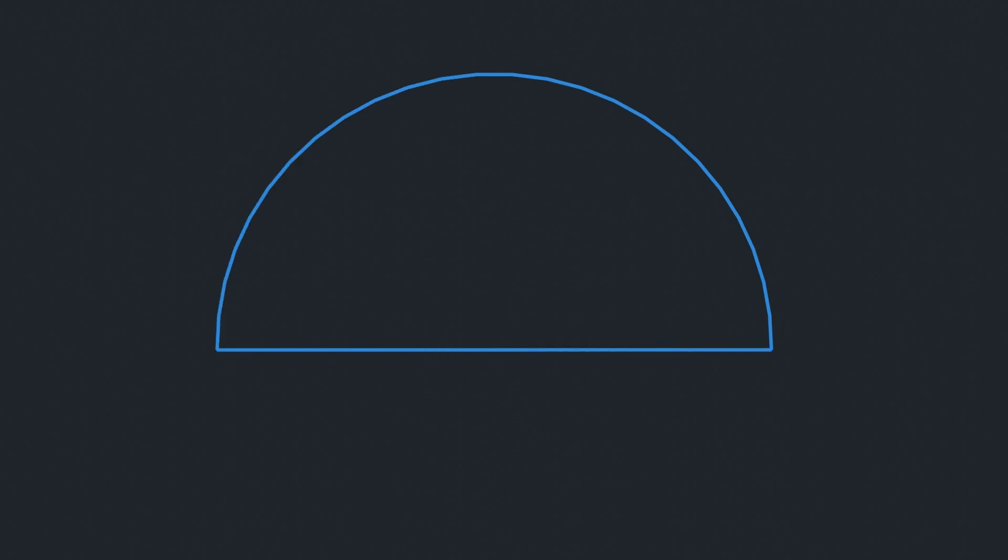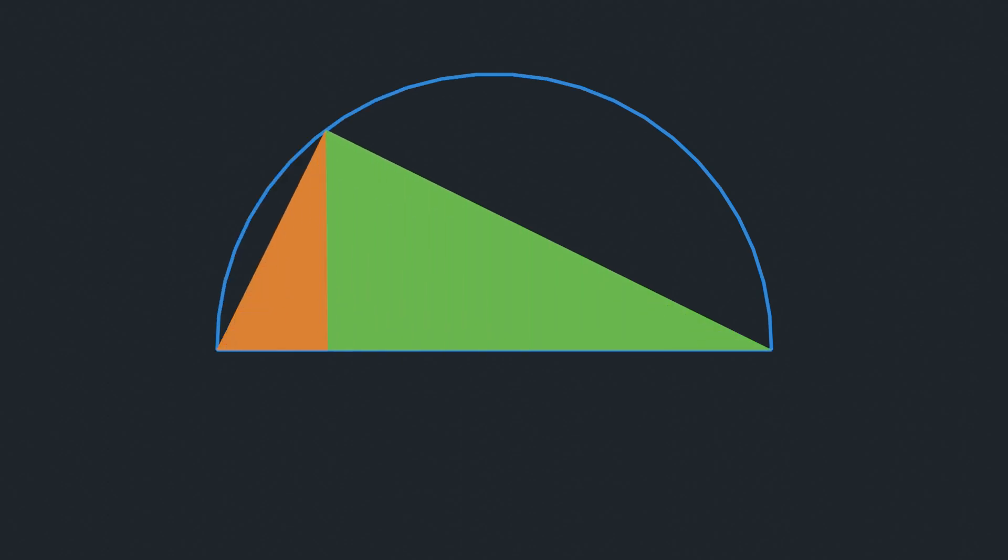A semicircle has two right triangles on its diameter sharing the same height, with areas of 8 and 32. Can you find the area of the semicircle? Pause the video and comment your answer.